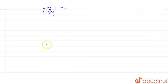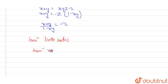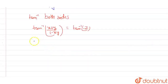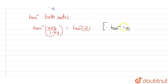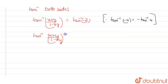From this, I'll take tan inverse of both sides. This will become: tan inverse of (x plus y) divided by (1 minus xy), and the right side will become tan inverse of minus z. Since tan inverse of minus a equals minus tan inverse of a, this gives us tan inverse of (x plus y)/(1 minus xy) equals minus tan inverse of z.